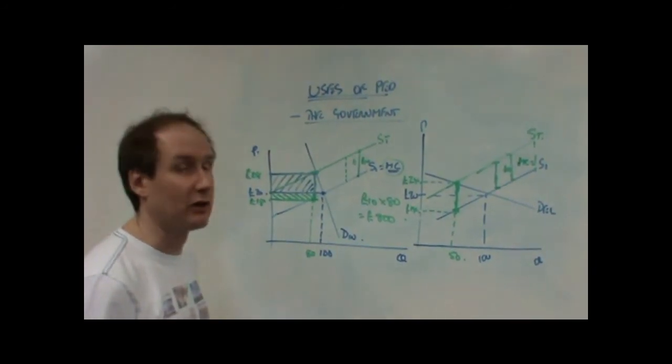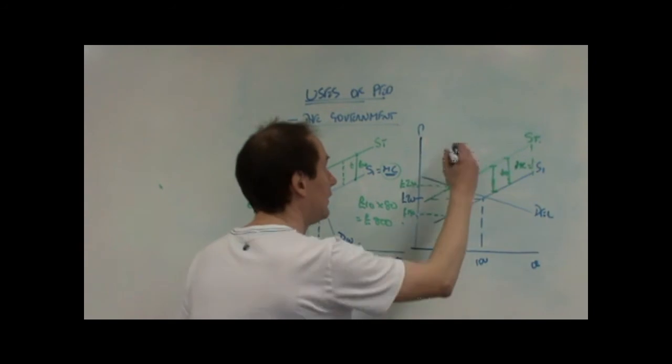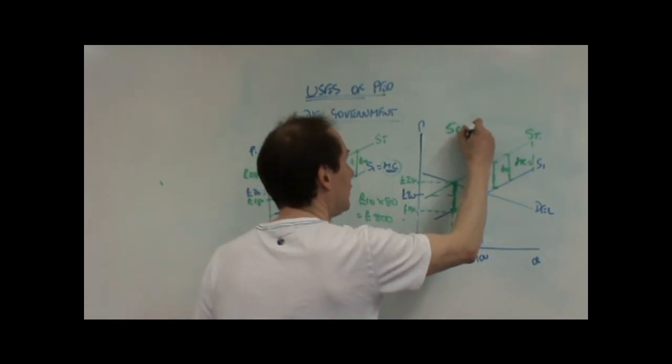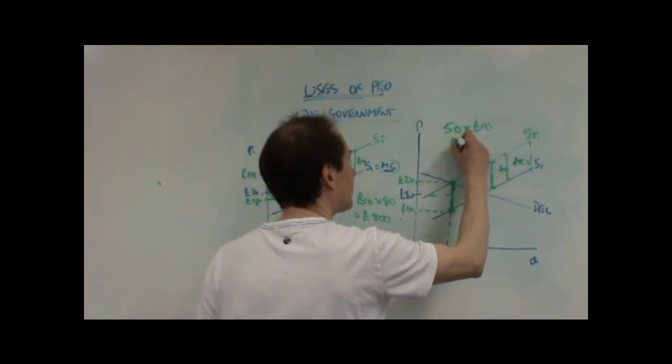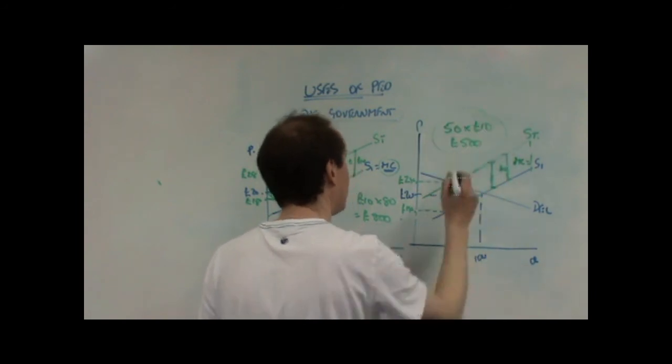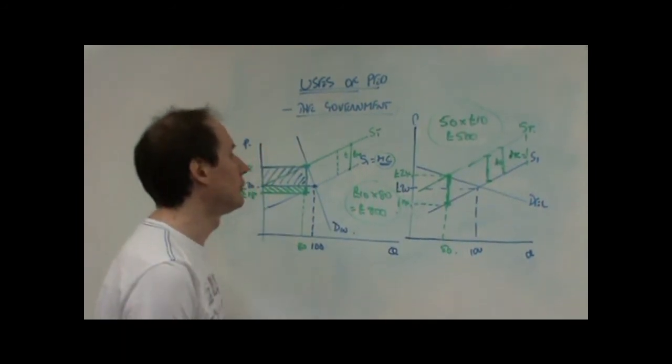And we see, therefore, that there are two things going on here. Firstly, the government's revenue is now only 50 units times 10 pounds. The government's revenue is only 500 pounds. Compared with 800 pounds before.